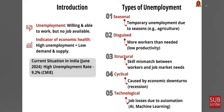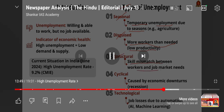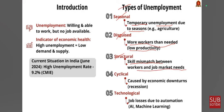Types of unemployment in India: first is seasonal unemployment — temporary unemployment due to seasons, for example temporary engagement of labor in the agricultural sector during productive work periods. Second is disguised unemployment — more workers than needed are present, resulting in very low productivity. Third is structural unemployment — caused by a skill mismatch between workers and the job market. Fourth is cyclical unemployment — caused by economic downturns mainly during recession periods. Fifth is technological unemployment, a part of structural unemployment, where job losses are due to automation like AI and machine learning replacing in-person skilled jobs.